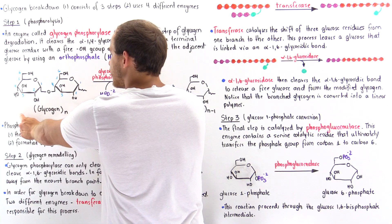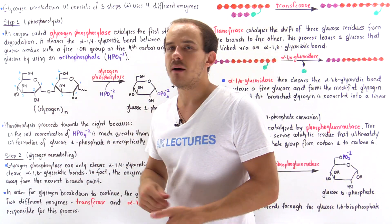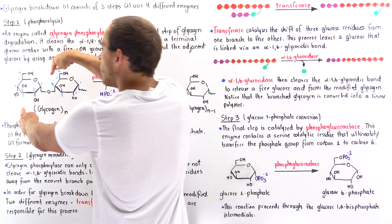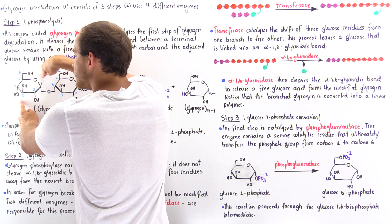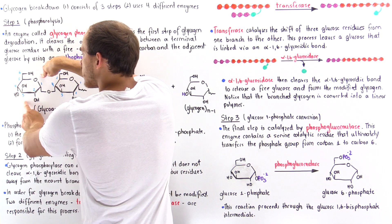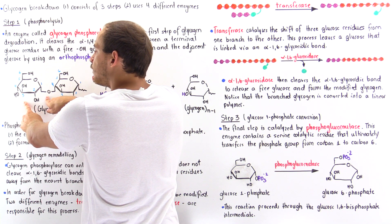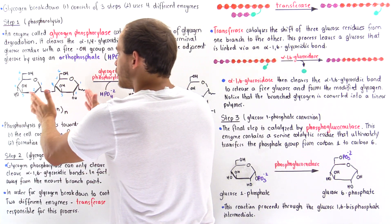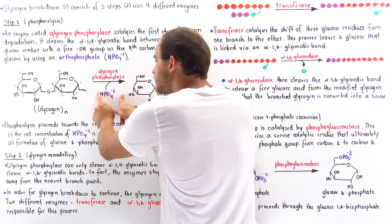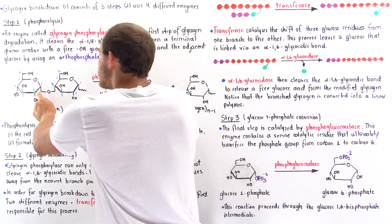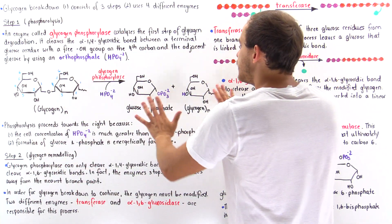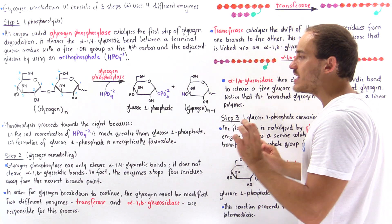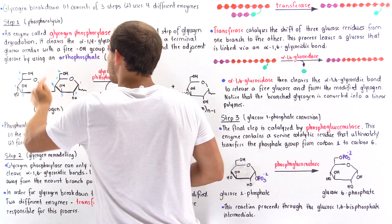On the left side, we have the reactant — the glycogen molecule that contains N number of glucose molecules. To simplify the diagram, I've only drawn two of these glucose molecules. This is the terminal glucose molecule that contains the free hydroxyl group on carbon number four of the glucose. This is the alpha-1,4 glycosidic bond that will be cleaved by the glycogen phosphorylase. The other reactant is the orthophosphate, which acts as a nucleophile that cleaves this alpha-1,4 glycosidic bond to form two product molecules: a glucose-1-phosphate and the glycogen that now contains one less glucose molecule.